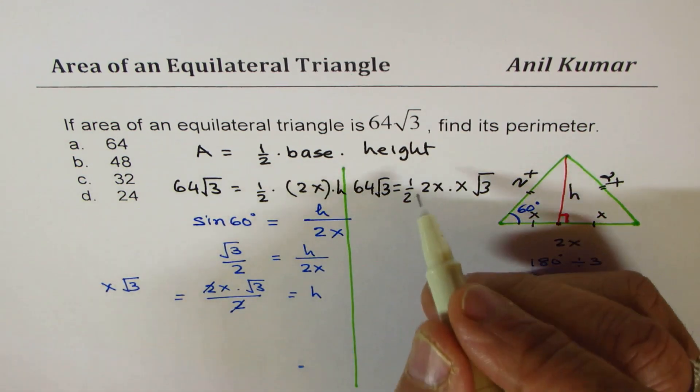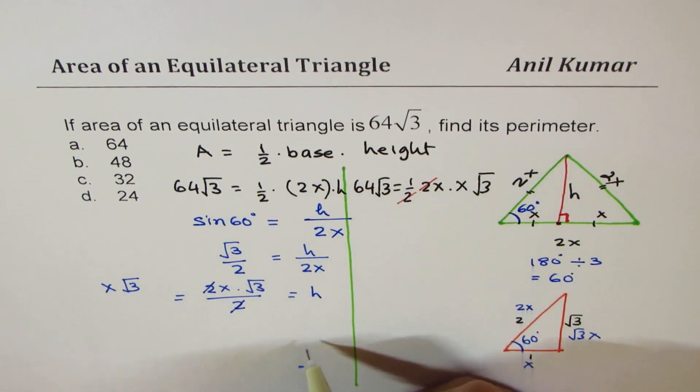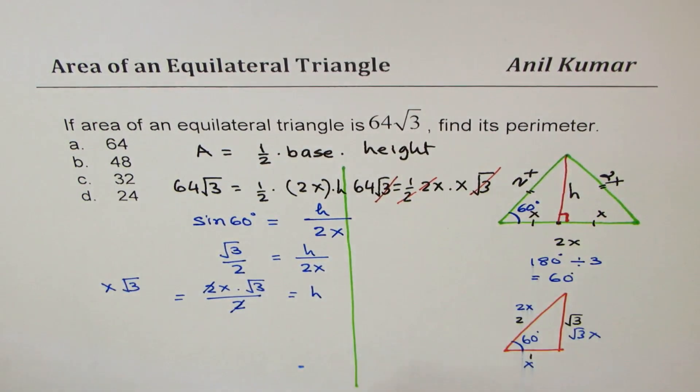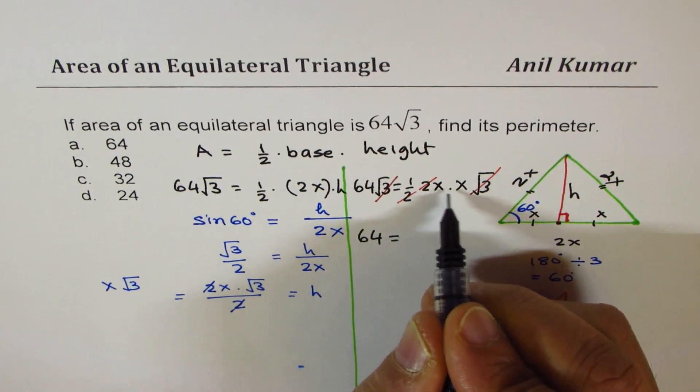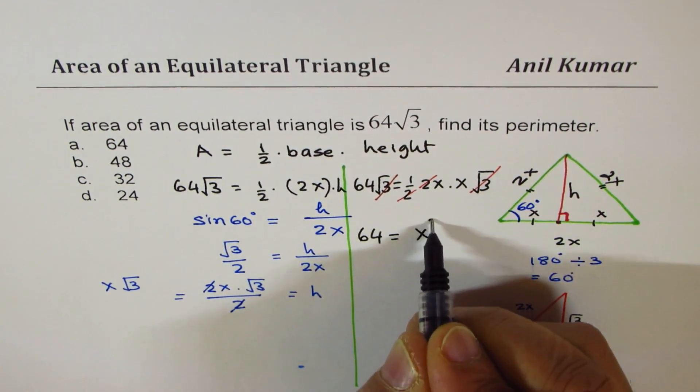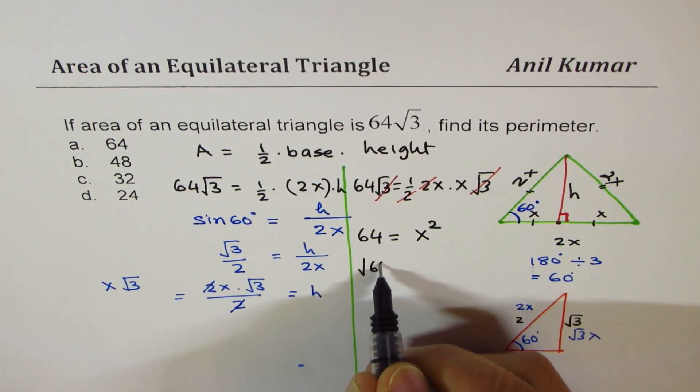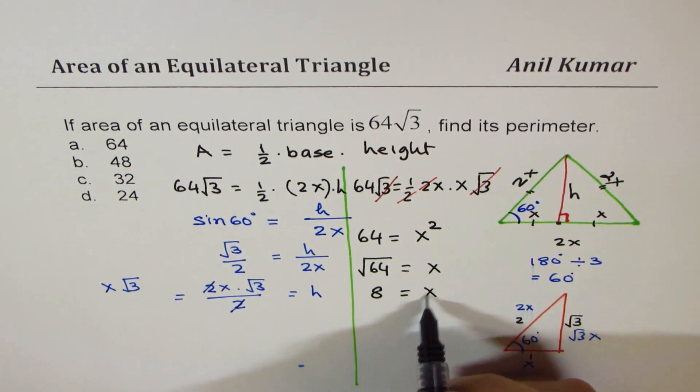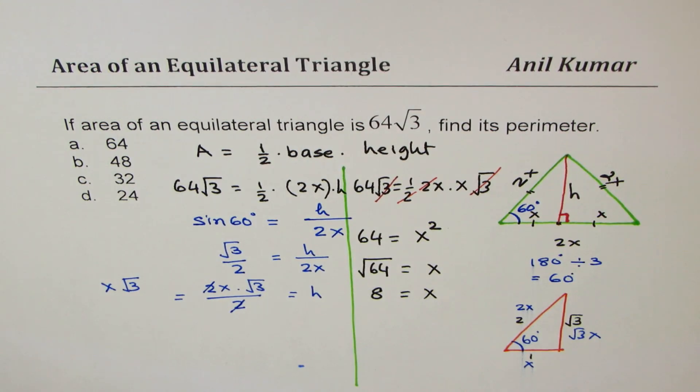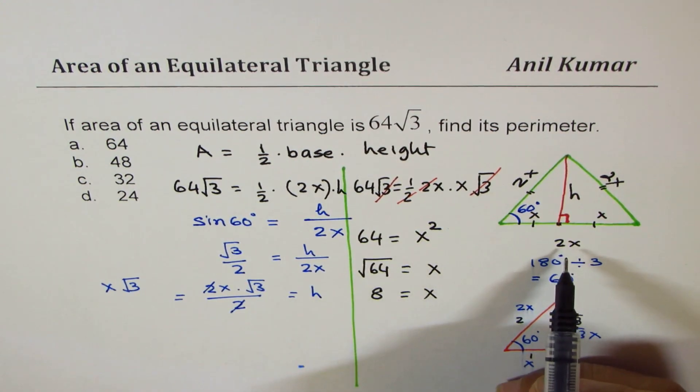So what you get here is that 64 is equals to x times x, which is x square, or square root of 64 is x. We have to take only positive values. So x is 8 for us. x is 8.